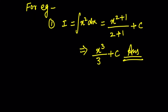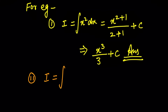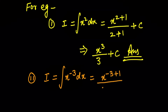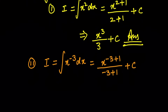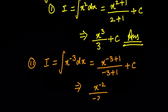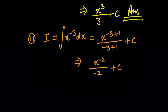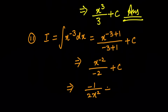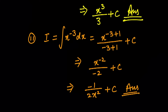We can also see another example: what is the integral of x^(−3)? Using the same formula ∫x^n dx = x^(n+1)/(n+1) + C, the integral of x^(−3) gives x^(−3+1) / (−3+1) + C, that is x^(−2) / (−2) + C, so the final result is −1/(2x²) + C, where C is a constant whose value can be any real number.